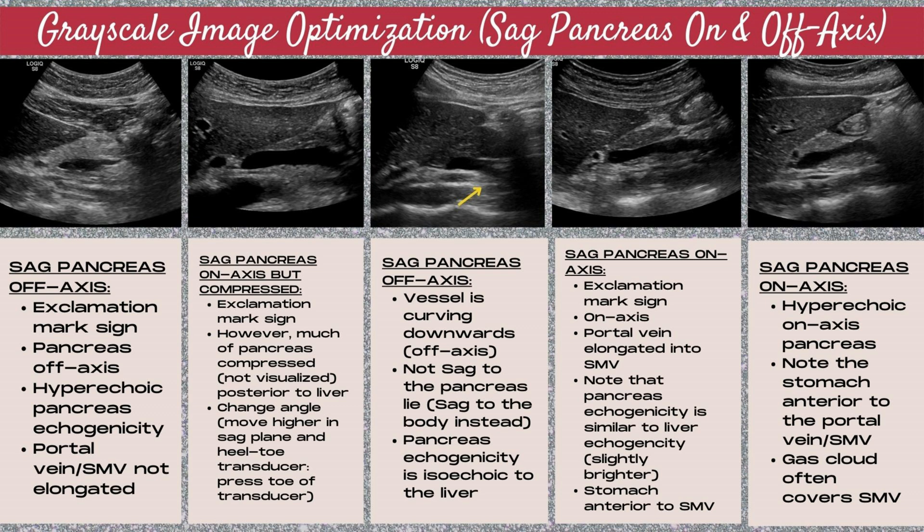When you start to see the vessels curving downwards, it means you're not sagittal to the lie of the pancreas itself — you're more sagittal to the body. Note in this example the pancreas echogenicity is isoechoic to the liver. In the next image over, the sagittal pancreas is on-axis — we see that nice exclamation mark sign, the elongated portal vein moving into the superior mesenteric vein, and we also see the hepatic artery. You can see a portion of the pancreas on top of the portal vein and also a portion of the uncinate process posterior to that portal vein, and the pancreas echogenicity is similar to the liver, just maybe slightly brighter.